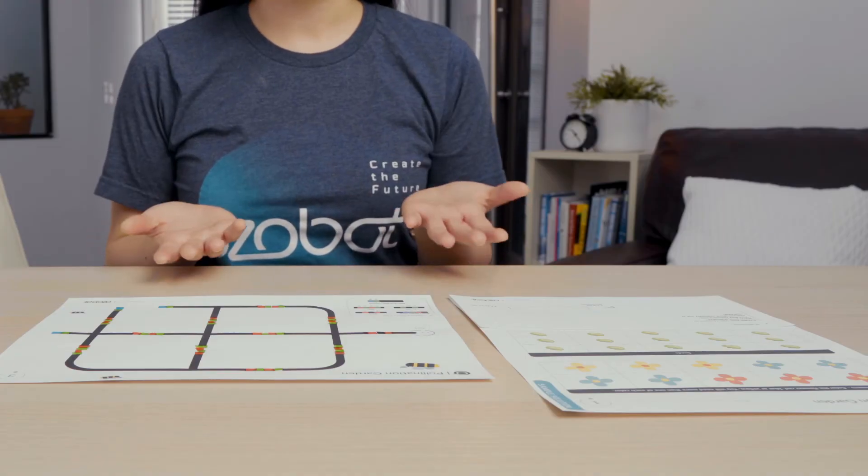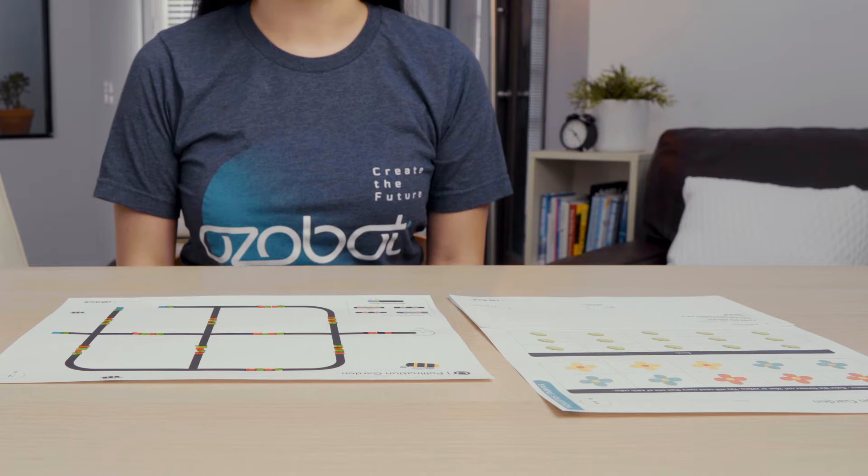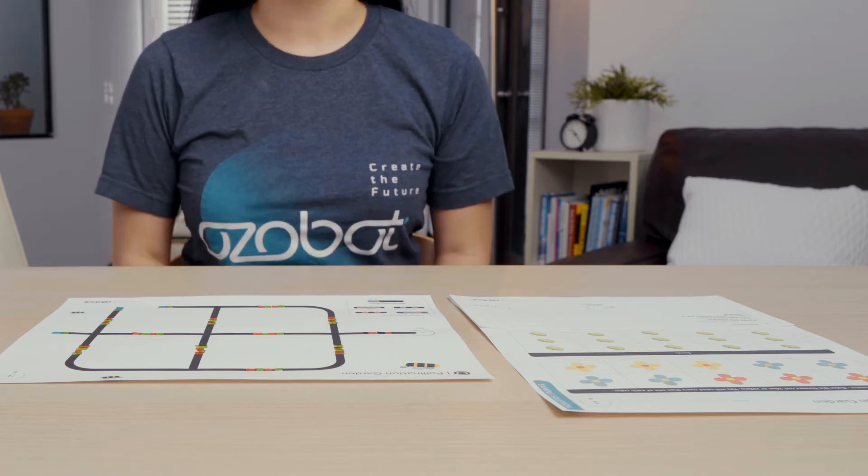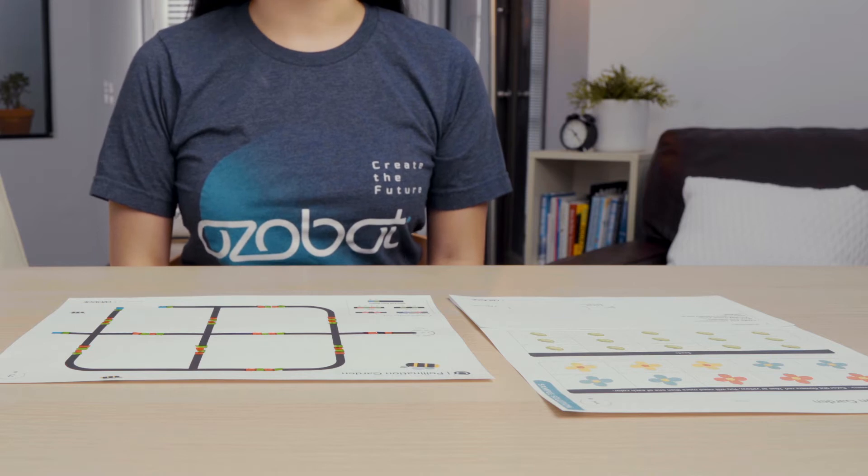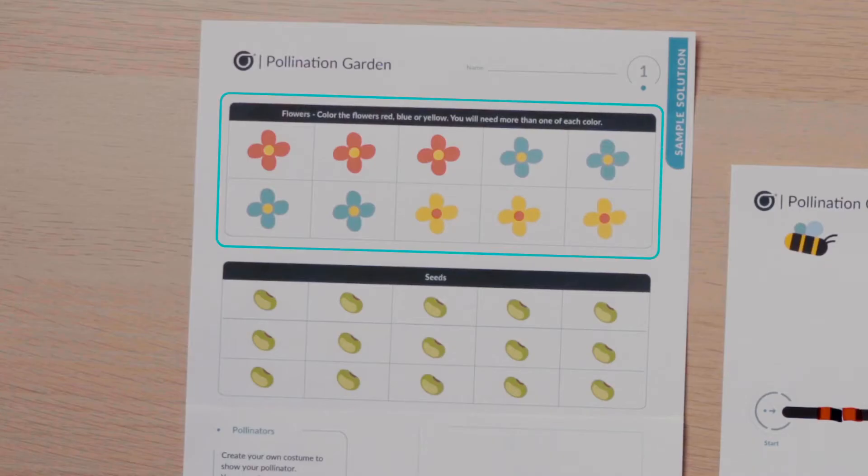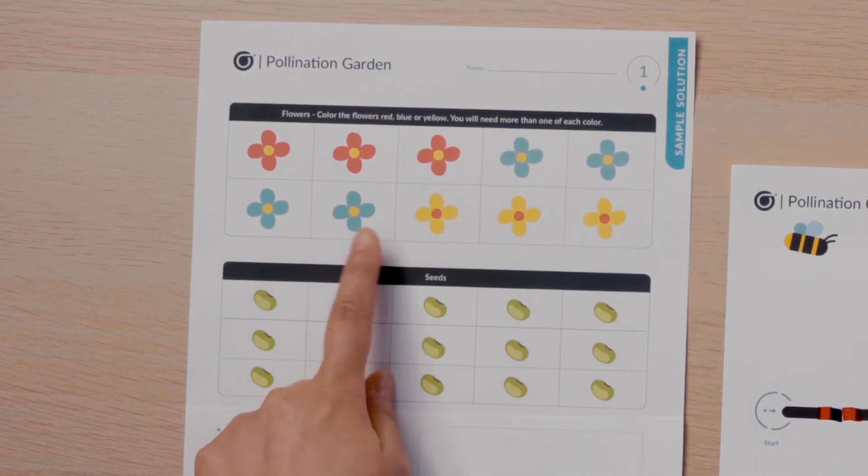Great job applying your color coding skills to complete the pathways on your model. You are ready to make your map look more like a garden. You will use the pollination garden pieces sheet to help. You will color the flowers using primary colors, red, blue, and yellow.